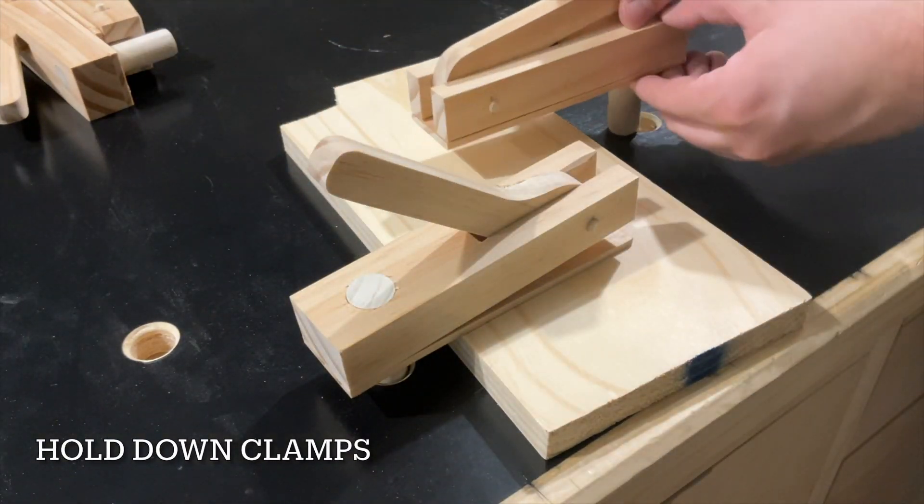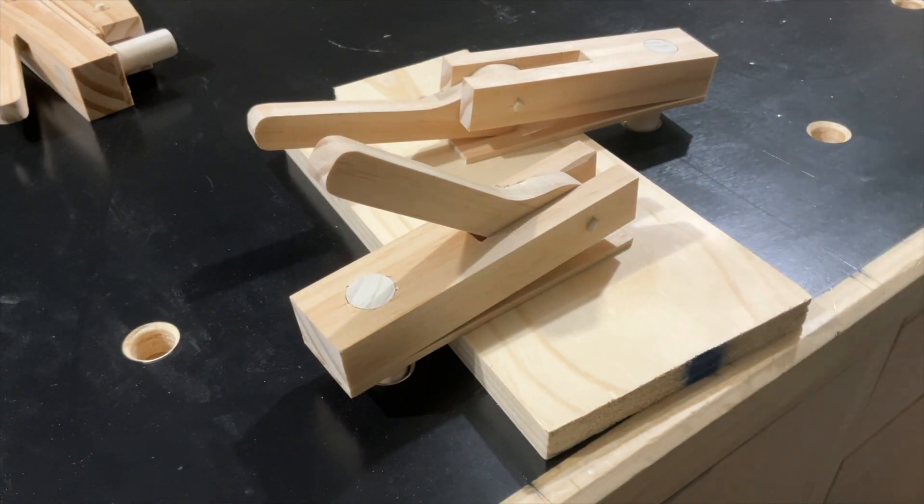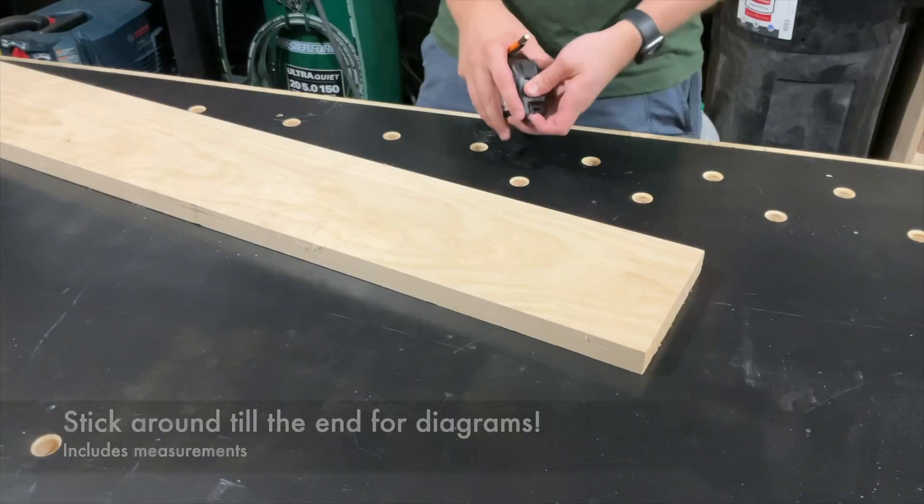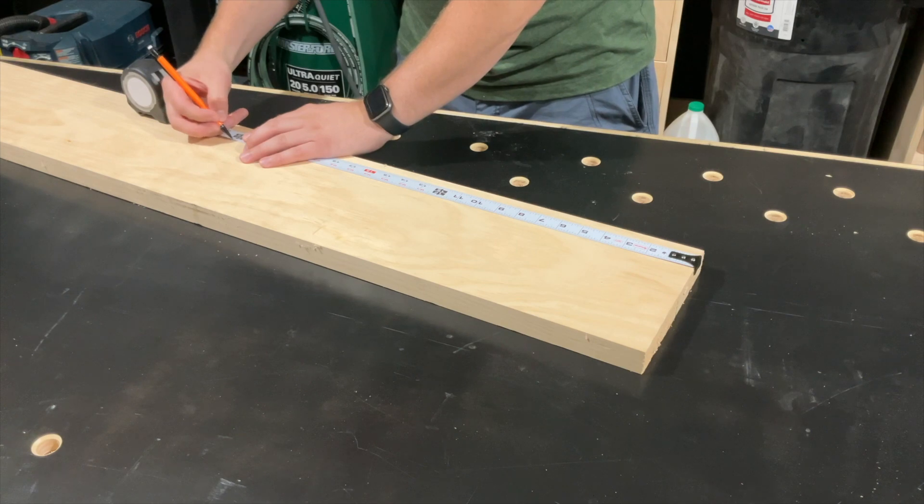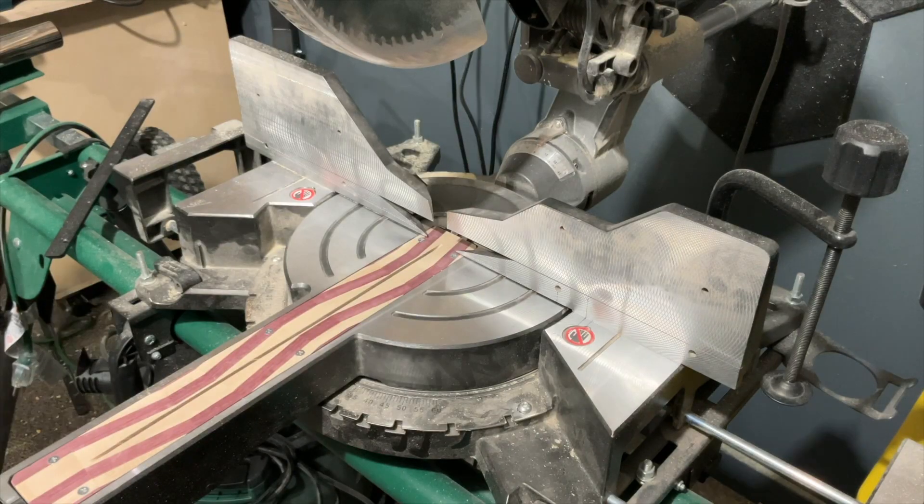In a previous video I made these hold down clamps and I wanted to see if this cam action could be used in regular woodworking clamps too, so I'll be making some f-body clamps out of wood just using select pine from Menards.